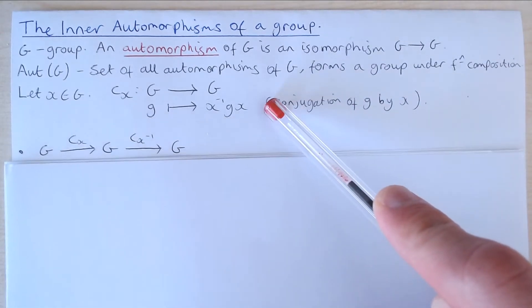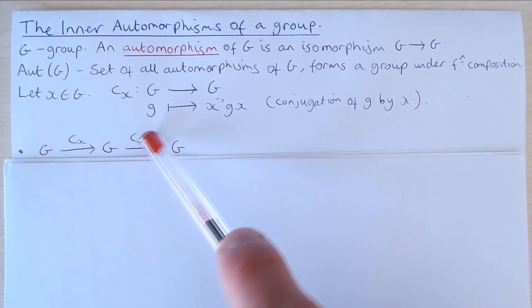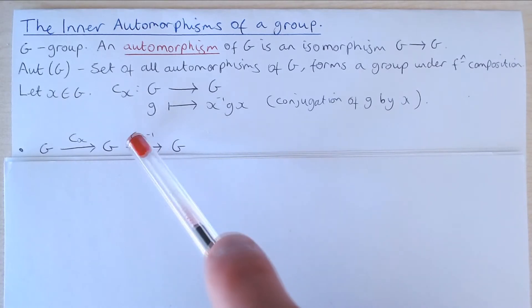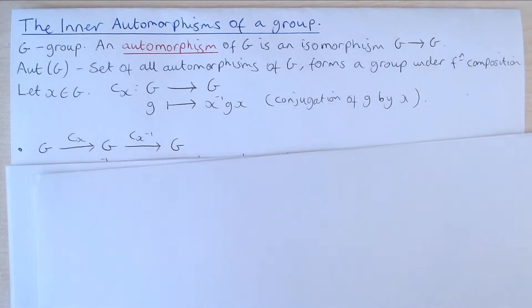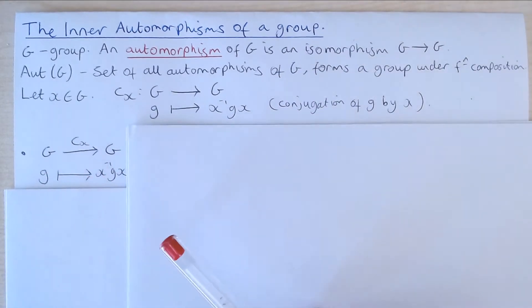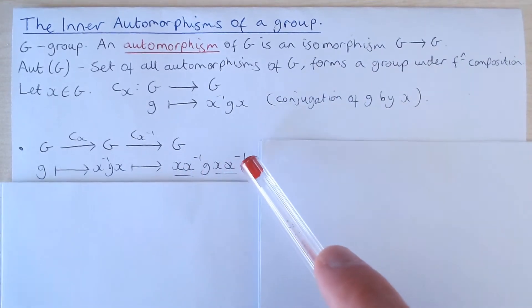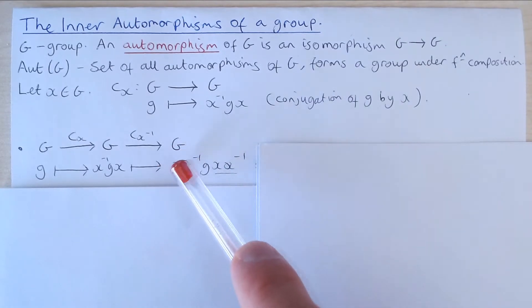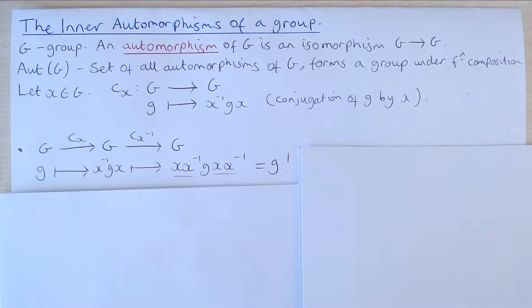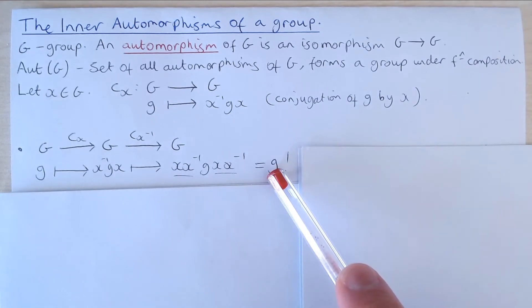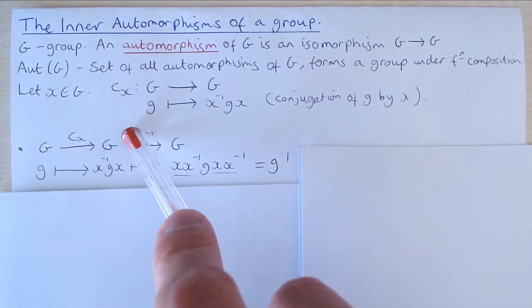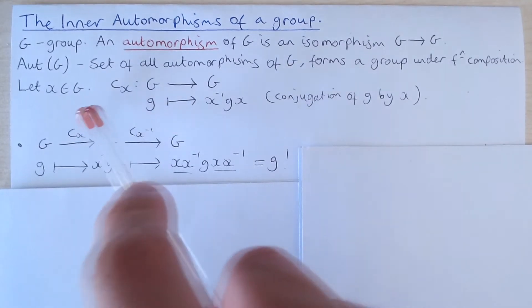So now what happens if we compose C of X by C of X inverse, where here we note that this is the element X inverse of the group G in the subscript? Well, first of all an element G in our group G is sent to X inverse GX by this definition. Then that is sent to X times X inverse GX times X inverse. This just collapses to the identity element as does this, so we actually get our element G back and the same thing holds if you interchange CX and CX inverse.